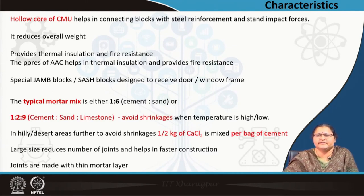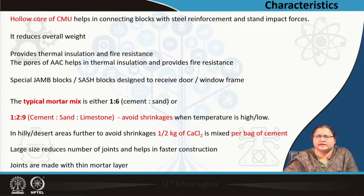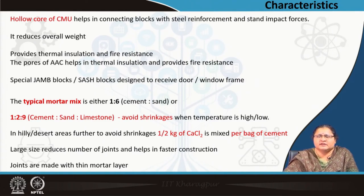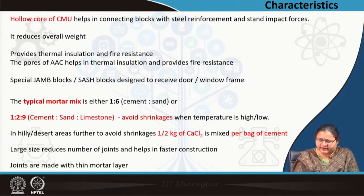It is not completely dry — there is an application of mortar similar to brick. The cement-sand ratio of mortar is 1:6 and they are applied very thin. In high temperature areas, to avoid shrinkage, lime may be added making the proportion 1:2:9. It is mostly used for desert and hilly areas, where further shrinkage can be controlled by using half kg of calcium chloride per bag of cement. As the number of units and joints are fewer, joints are much less in number and thin too.